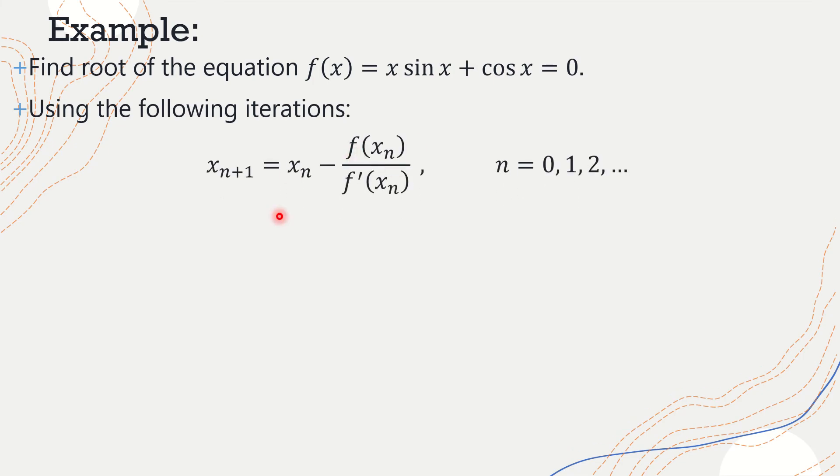And the iterations are, remember the formula, that's xₙ₊₁ = xₙ - f(xₙ)/f'(xₙ) for n = 0, 1, 2, 3, and 4.